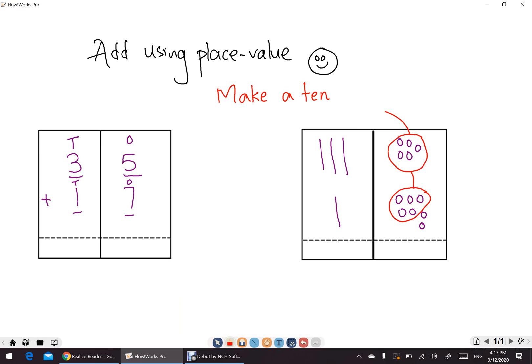So here, we will have 1 more 10. So we have 1, 2, 3, 4, 5. We have 5 10's. And the remaining, we have 2 1's. So 35 plus 17 equals 52.